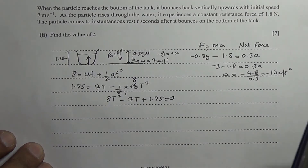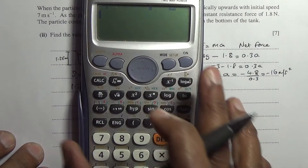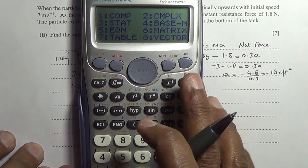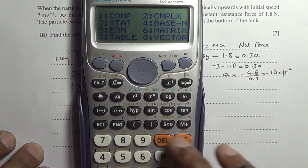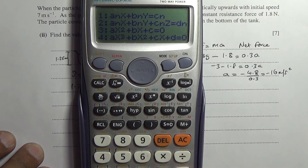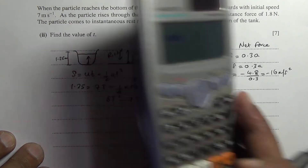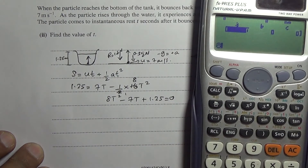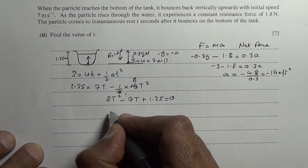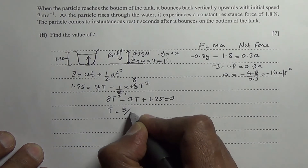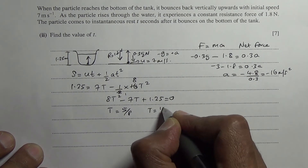Solving this quadratic equation gives two solutions. You can use the quadratic formula in exams. The two solutions are t = 1/4 and t = 5/8. The time to go upward is 1/4, which is 0.25 seconds, since at that point the particle is still moving upward with higher speed.